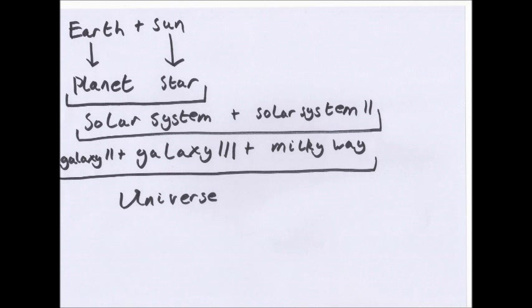You also have a star — the Sun. These planets and the star make up a solar system. Lots of solar systems all together form a galaxy; in this case it's called the Milky Way. Loads of different galaxies together make up the universe. So you have a planet in a solar system, in a galaxy, in a universe.